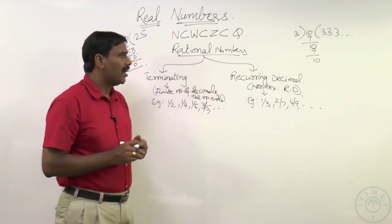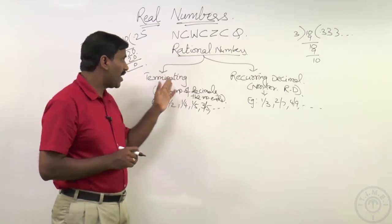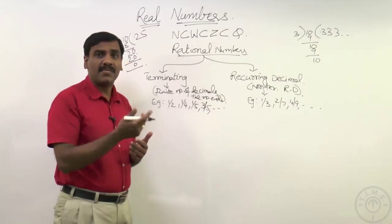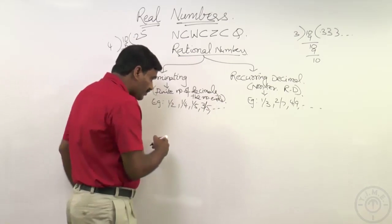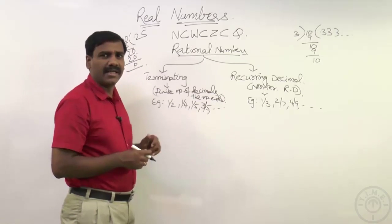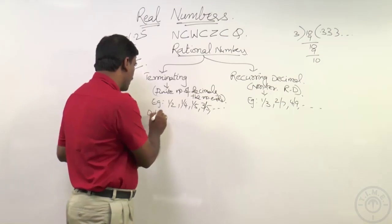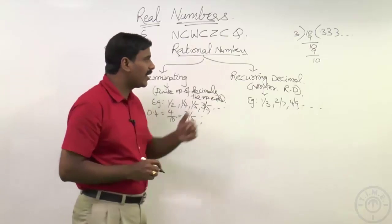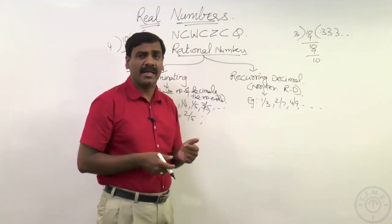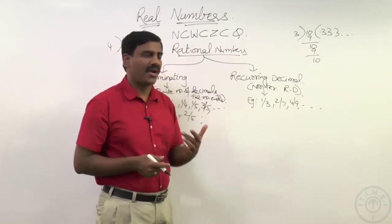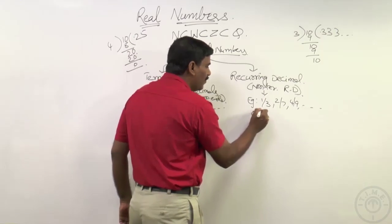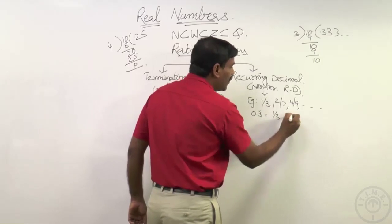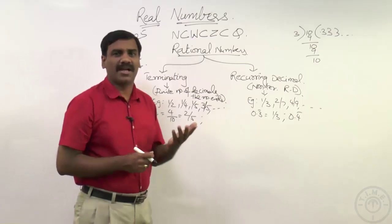We may have problems on how to convert a decimal value into a fraction. We have been converting fractional numbers into decimals, but the reverse is also possible — converting decimals into fractions. For terminating decimals, there is no difficulty. For example, point four is simply four by ten, which simplifies to two by five. But when we have recurring decimals with uniform repetition, we need a procedure to convert them into fractions.